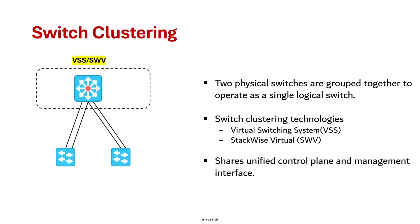They share a unified control plane and management interface. They are typically used for distribution and core layer switches. VSS is usually supported on platforms such as Cisco Catalyst 6500, 6800 series, and some 4500 series routers.